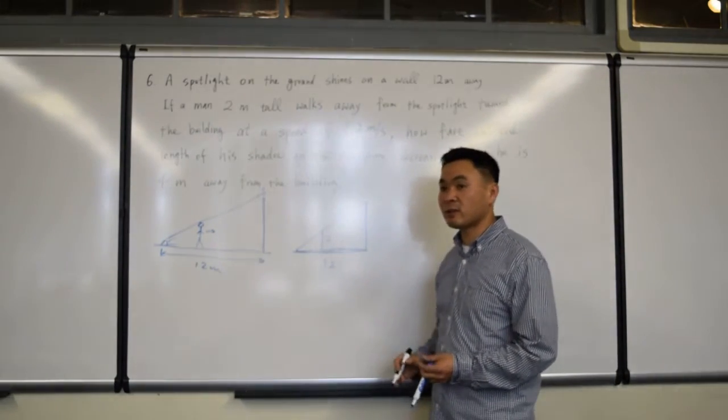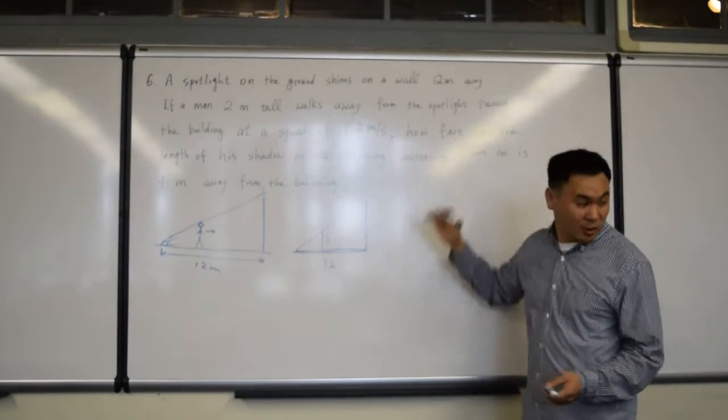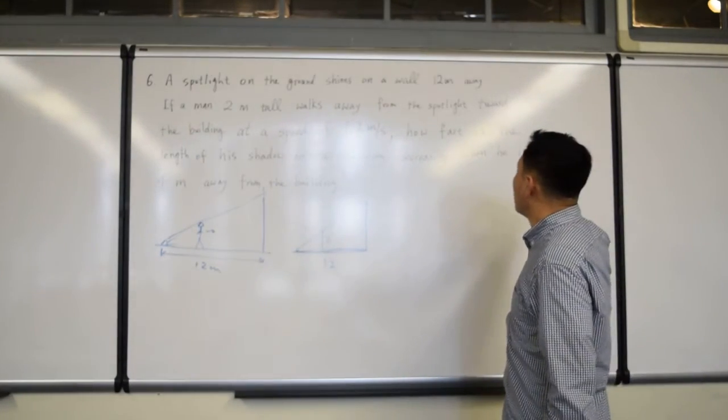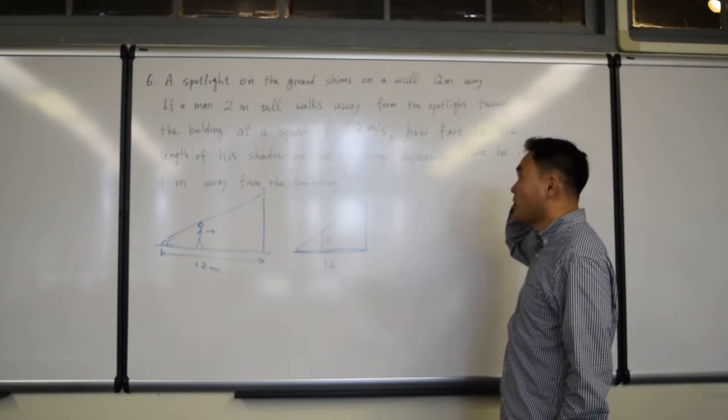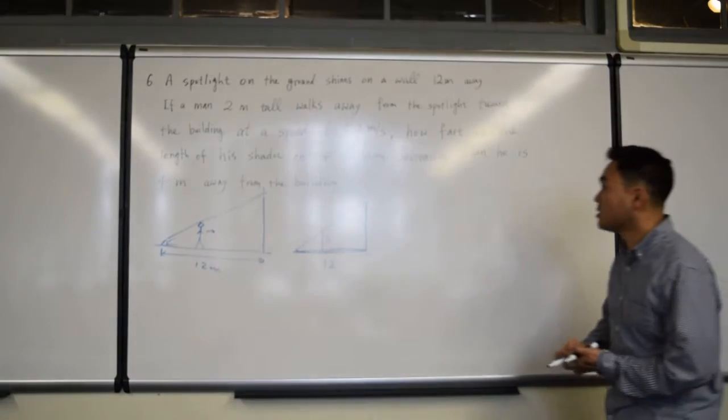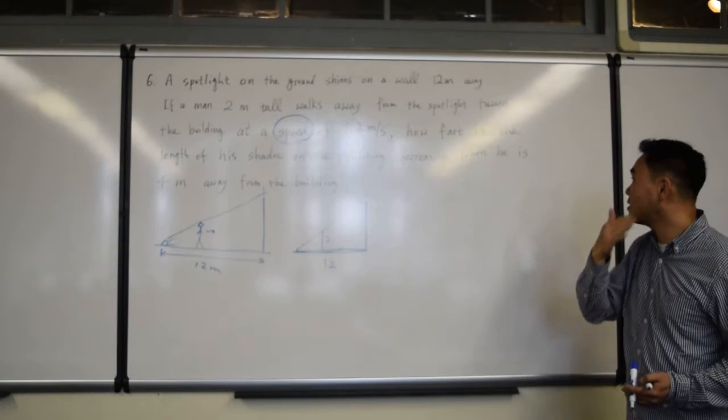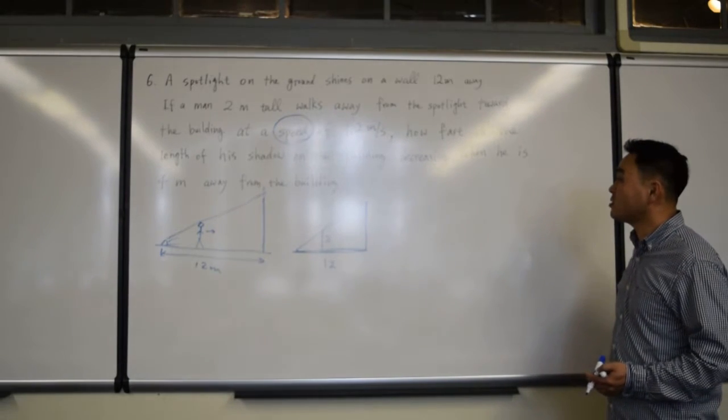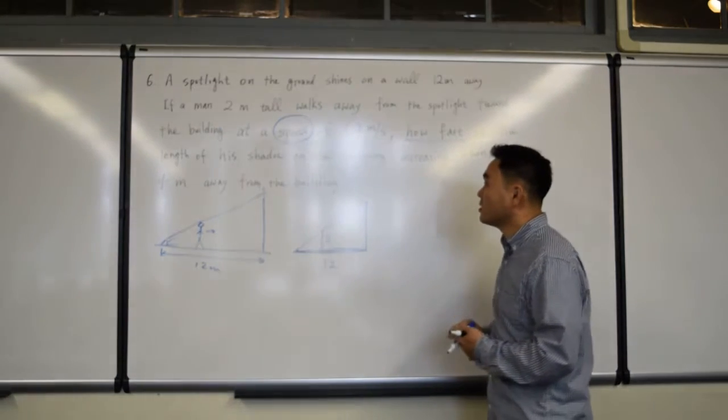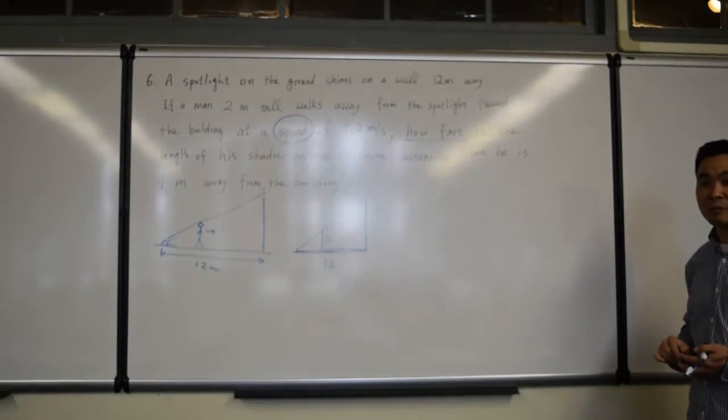And after this, now you have to think about various derivatives and their relations, okay? So let's look at the question again. Do you see any rate of change, or speed, or fast? Do you see those words? I see them, right? Speed. How fast is the length of his shadow on the building decreasing when he is 4 meters away from the building, right?